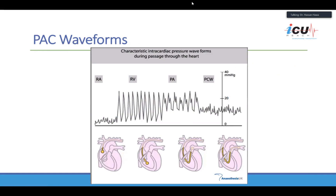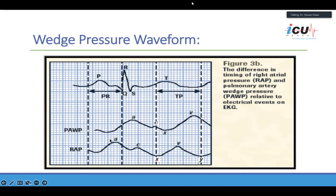As you insert the catheter, you are guided by the waveforms generated. Once past the introducing sheath, you should inflate the balloon straight away. The initial trace is the right atrial trace, then the right ventricular trace. When you reach the pulmonary artery, there's a step-up in diastolic pressure to indicate you're in the PA. As the balloon is inflated, it wedges in a small pulmonary artery branch, reflecting the left side of the heart. The wedge pressure waveform is similar to the CVP waveform, with slight delay compared to the electrical cardiac cycle.